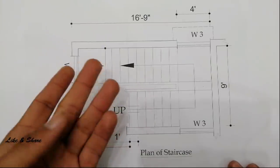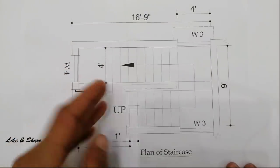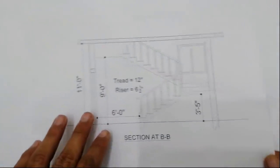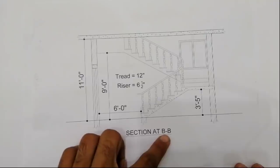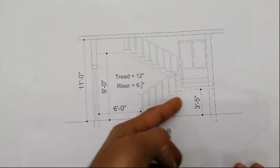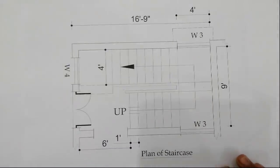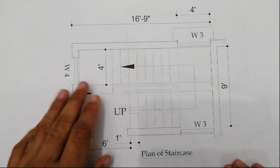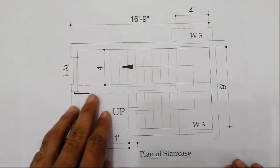Here are some more details about the staircase. We have the plan for the staircase and the second drawing shows its section at BB — the cross section showing the height of the floor and also the height of each flight. If this video is helpful for you, please like this video and subscribe to this channel and press the bell icon to get notifications for new videos.